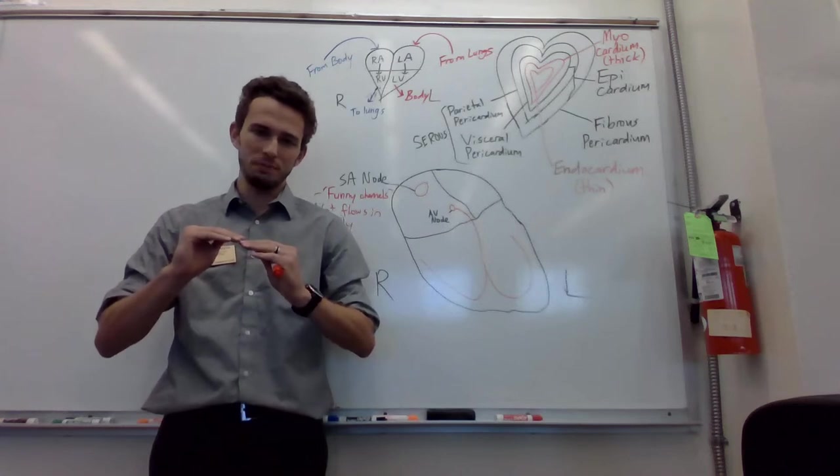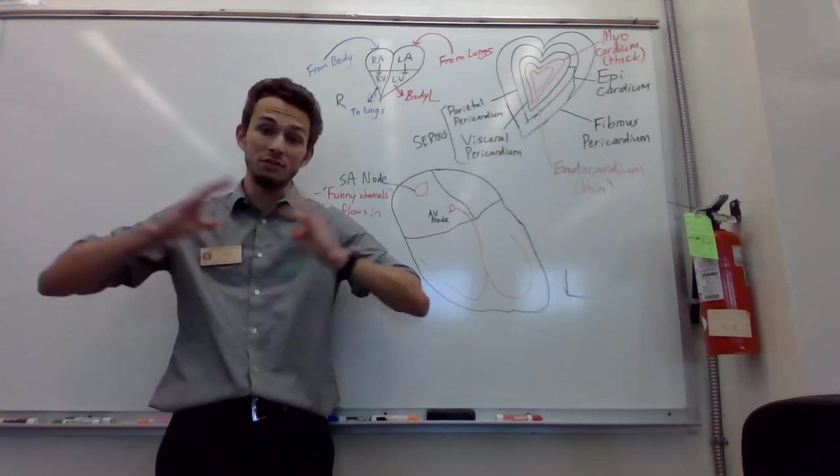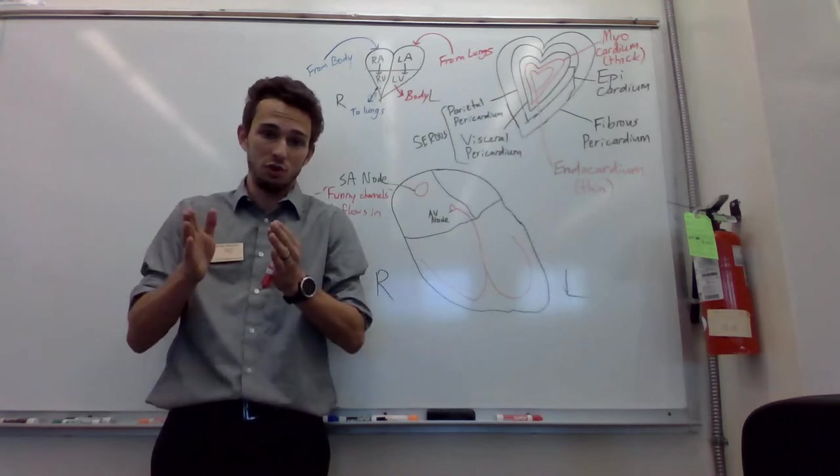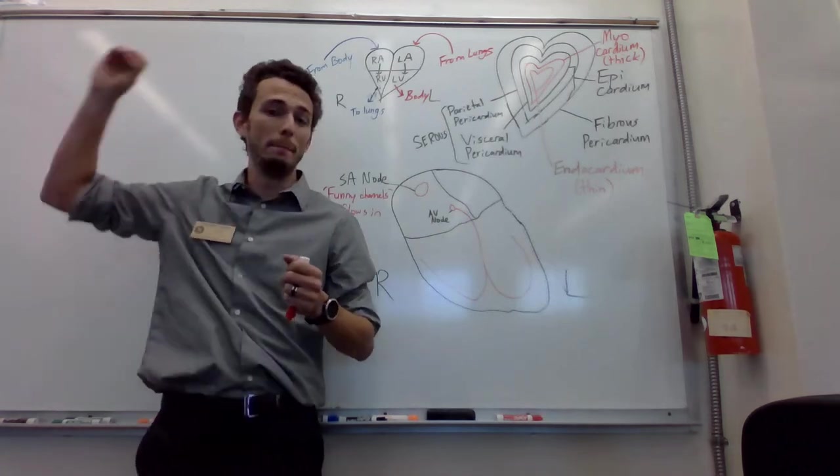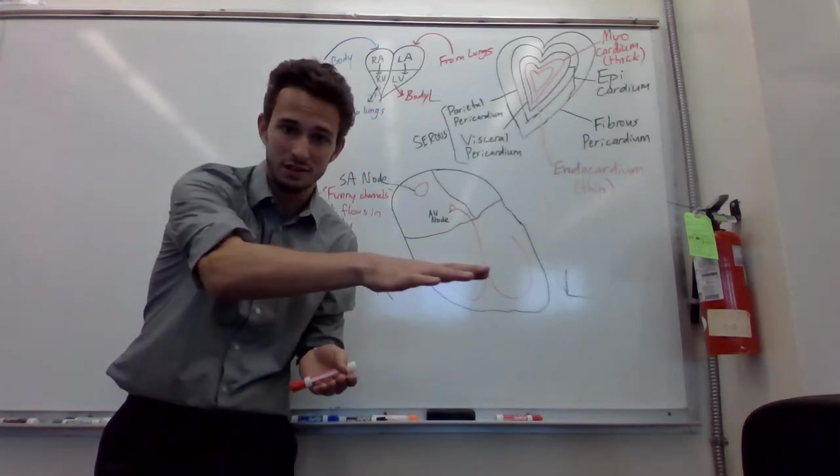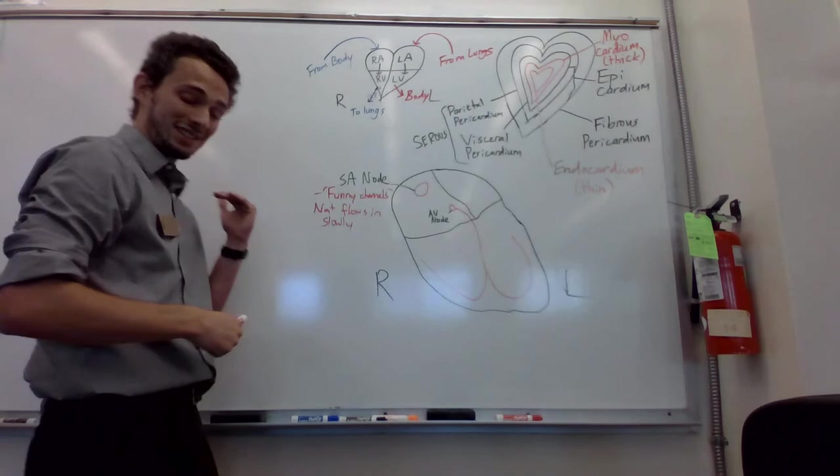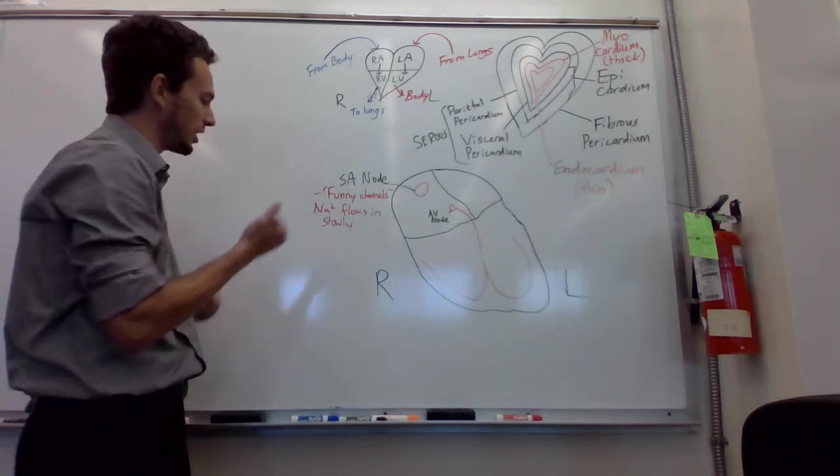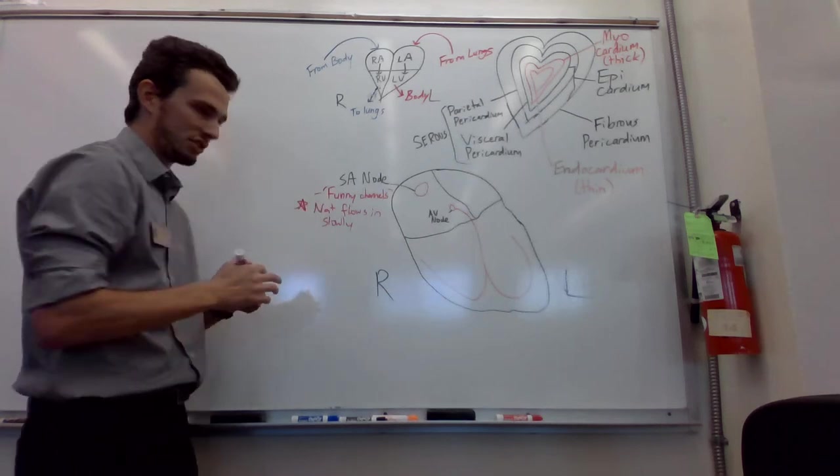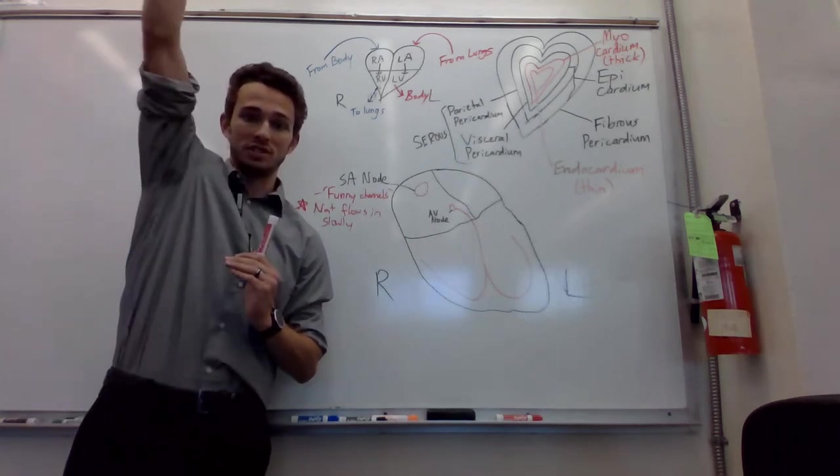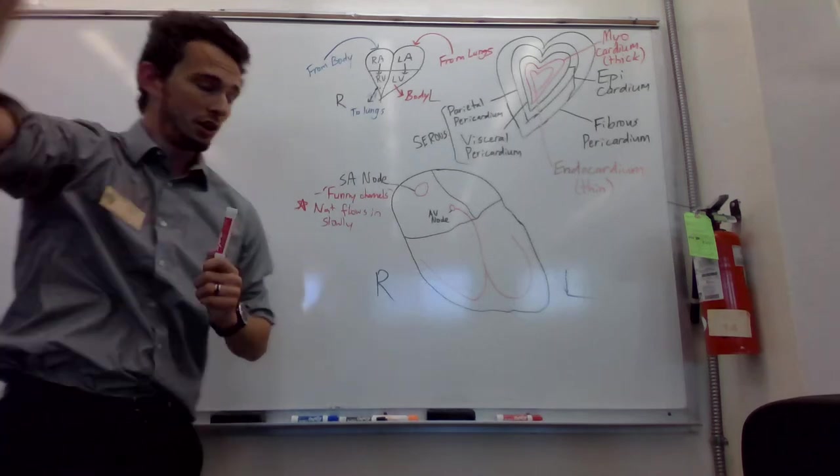Once that threshold potential is reached, a bunch of other channels will basically open up. So voltage-gated ion channels will open up, bringing in a bunch of positive ions. And that is when the action potential will be sent. The reason it can do it itself, like conducting its own action potential itself, is because these sodium ions are flowing in slowly, basically depolarizing the membrane slowly. And then it reaches threshold and then boom, sends action potential. So that's really important. I'll talk about it more next week.